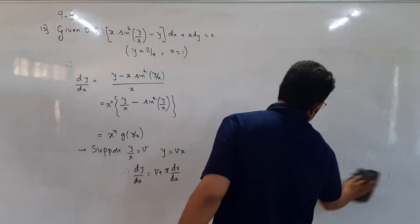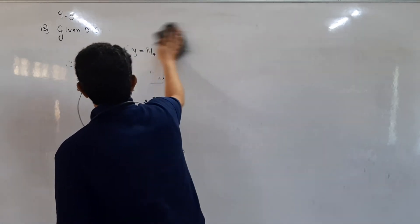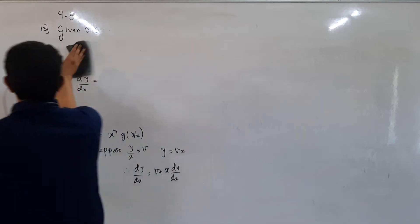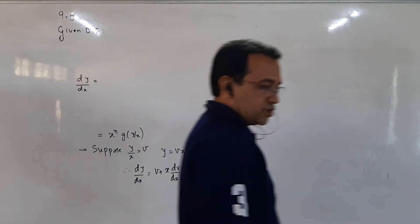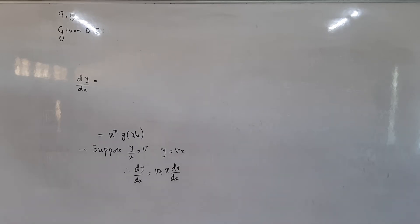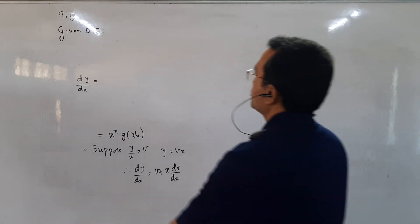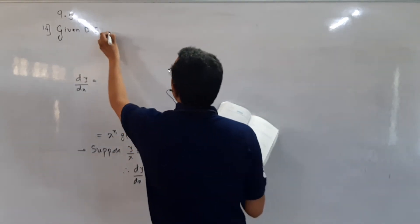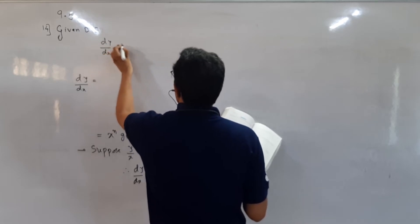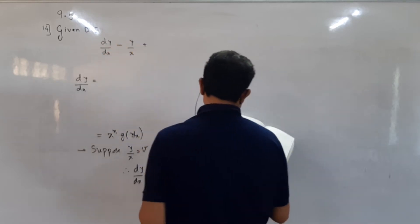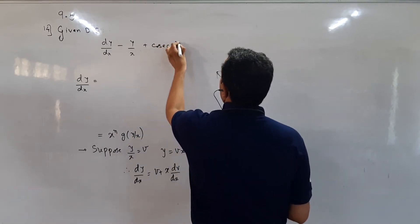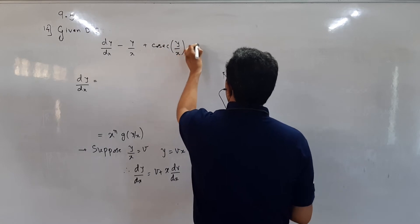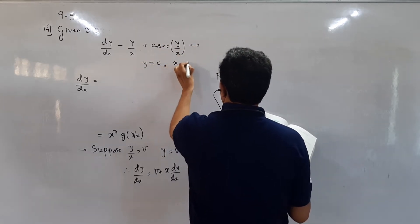Now students, we are doing sum number 14. The given differential equation is dy/dx minus y/x plus cosine(y/x) is equal to 0, with initial condition when y is 0 and x is 1.